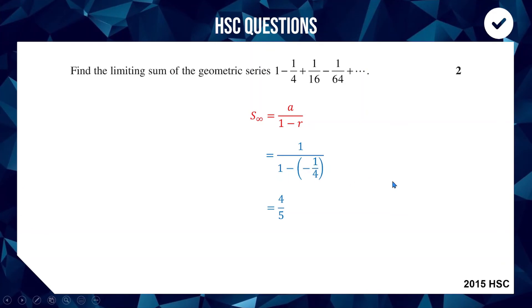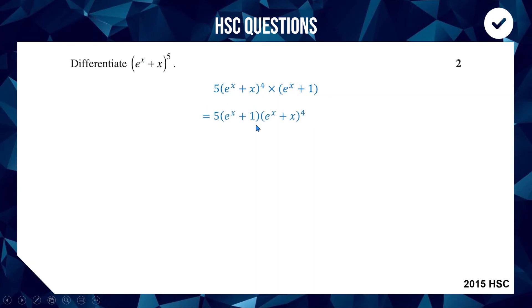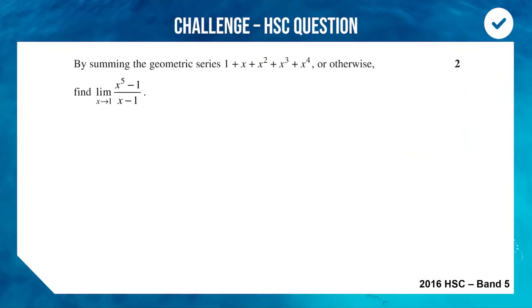For the third part: differentiate (eˣ + x)⁵. Using the chain rule, bring the power down to the front: 5(eˣ + x)⁴. Then multiply by the derivative of what's inside the bracket — the derivative of eˣ is eˣ and the derivative of x is 1, so we multiply by (eˣ + 1). That gets you two marks: one for using the chain rule and one for knowing the derivative of eˣ.